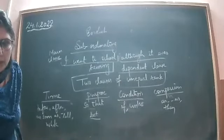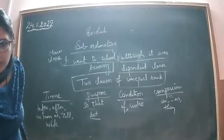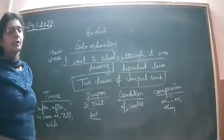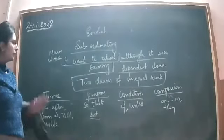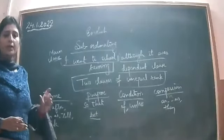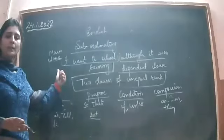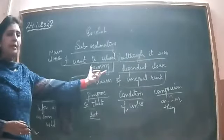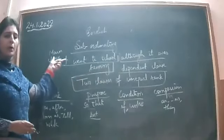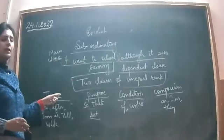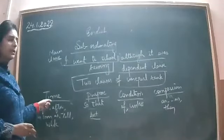For comparisons we use subordinating conjunctions. So now you have come to know what subordinating conjunctions are — they join clauses of unequal rank, where one is the main clause and another is the dependent clause.